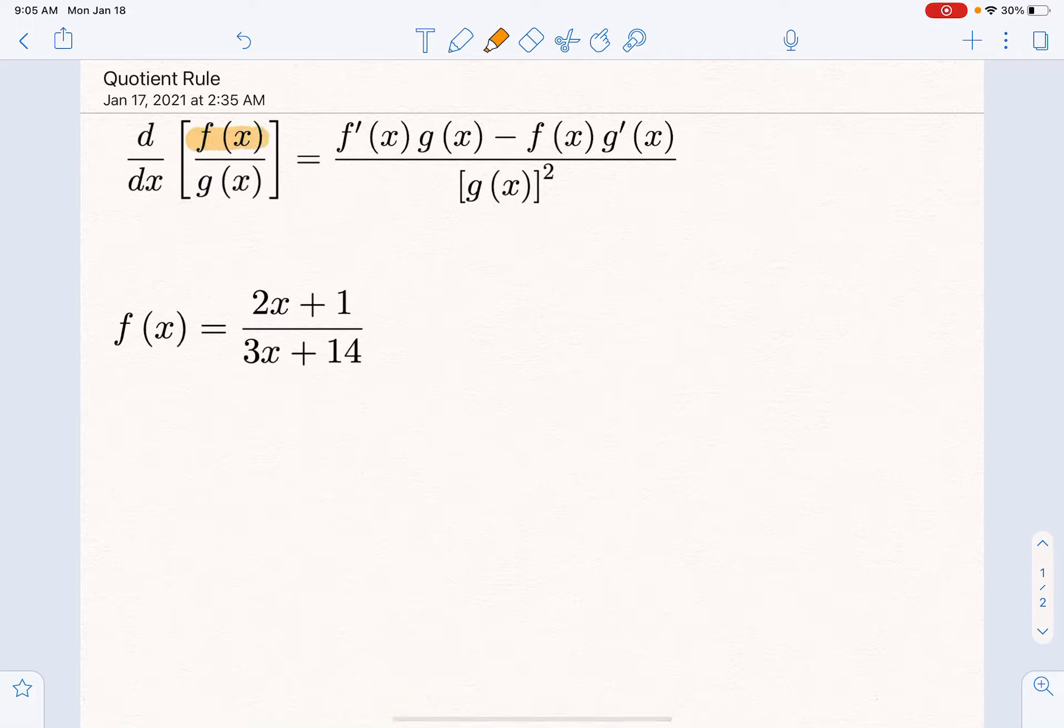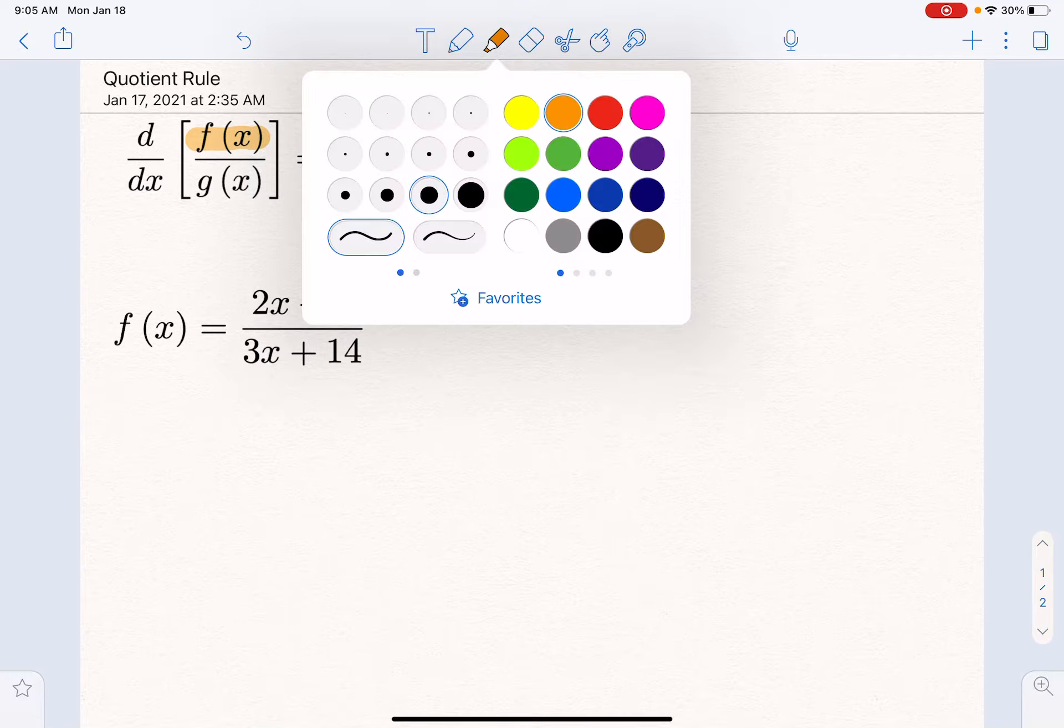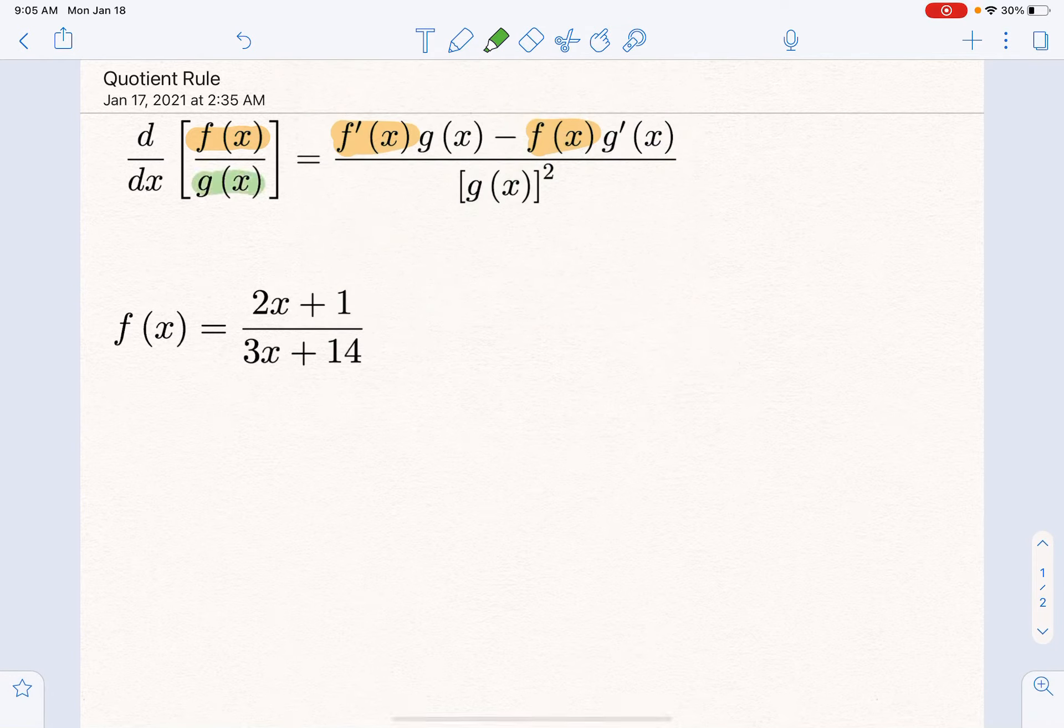Notice that f(x) is the numerator, so notice where it sits in the quotient rule. And g(x) is in the denominator—where does it sit in the quotient rule? We have the derivative of the first times the second, just like we started the product rule.